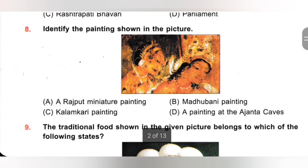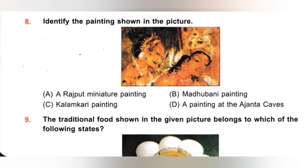8th. Identify the painting shown in the picture. A. A Rajput miniature painting, B. Madhubani painting, C. Kalamkari painting, D. A painting at the Ajanta Caves. The painting shown in the picture is a painting at the Ajanta Caves, also called Mural Paintings. Ajanta Caves are located in Maharashtra. Option D is the correct answer.